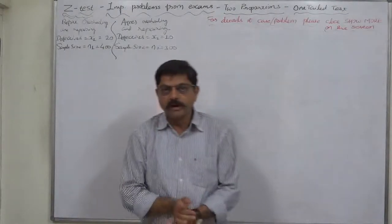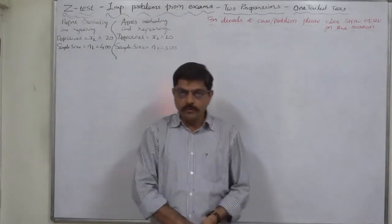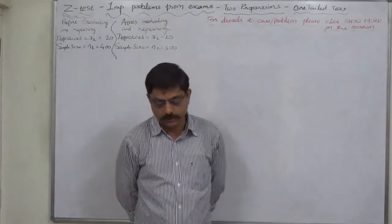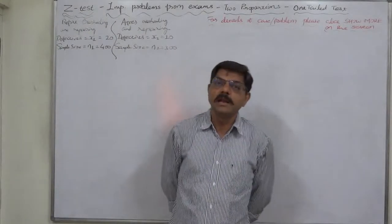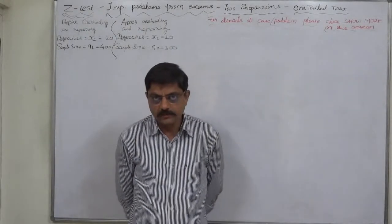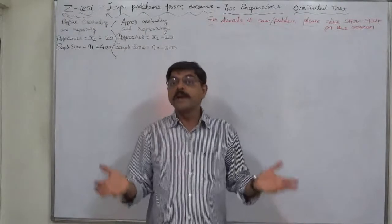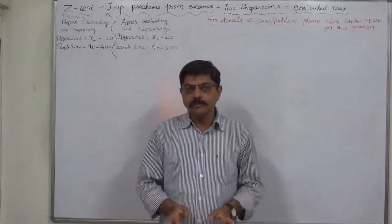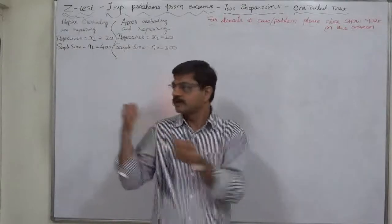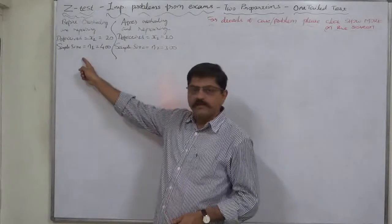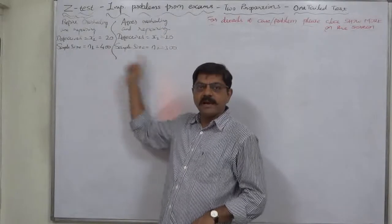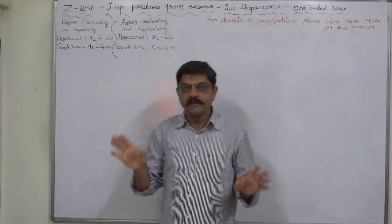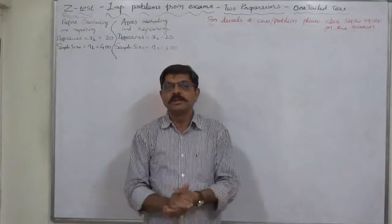Now the wording: has the machine improved? The null hypothesis in this case is that the machine has not improved, because we always take a null hypothesis of no difference — no significant difference between the proportion of defective articles before and after overhauling and repairing. That means the machine has not improved.